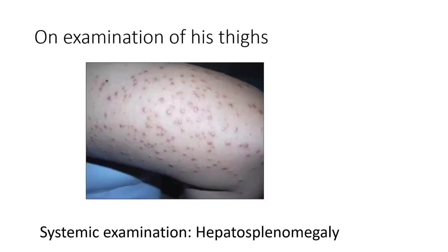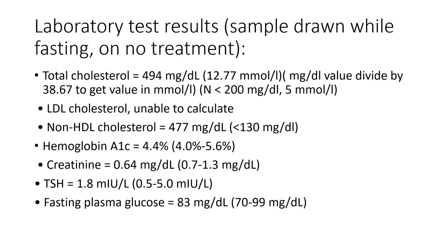On examination of this patient, lesions were seen on his thighs. On systemic examination, he was found to have hepatosplenomegaly. Looking at his lab parameters: his total cholesterol was very elevated at 494 — we know the maximum range is up to 200 milligram per deciliter. LDL cholesterol was unable to be calculated because of the very high triglycerides. We know that with any triglyceride above 400, the formula to calculate LDL does not apply. The non-HDL cholesterol was very high at 477 milligram per deciliter. HbA1c was normal, renal functions were okay, and thyroid was normal as well.